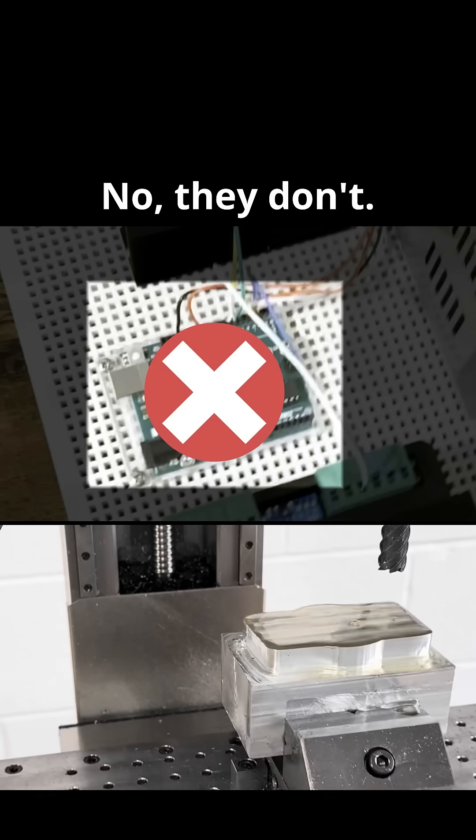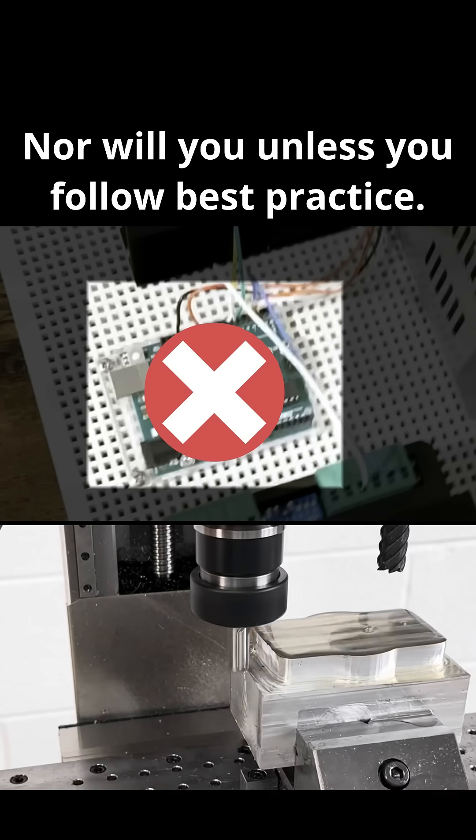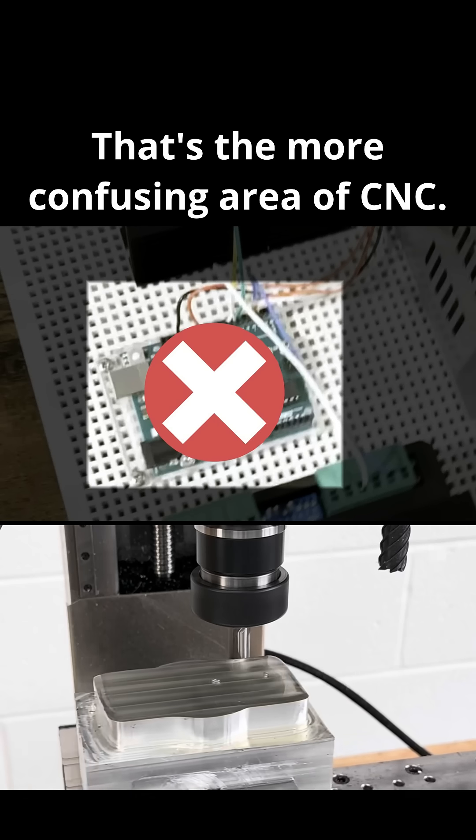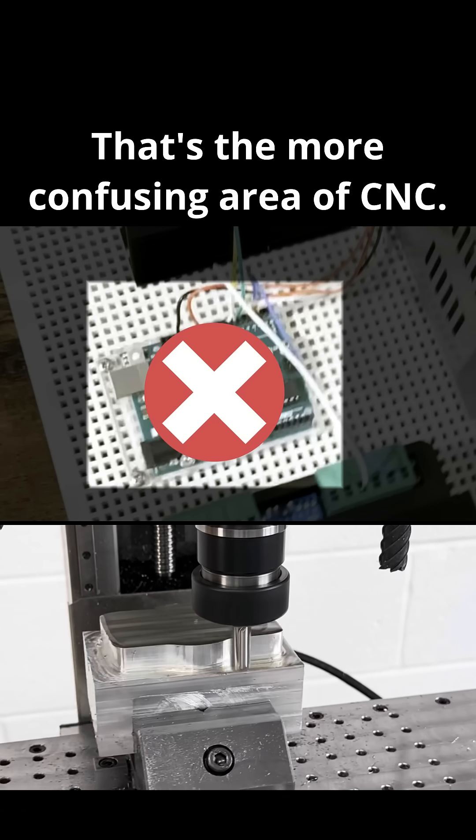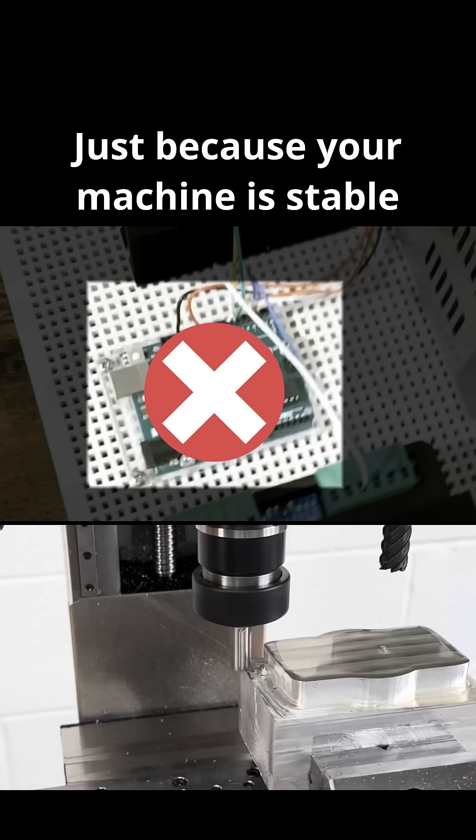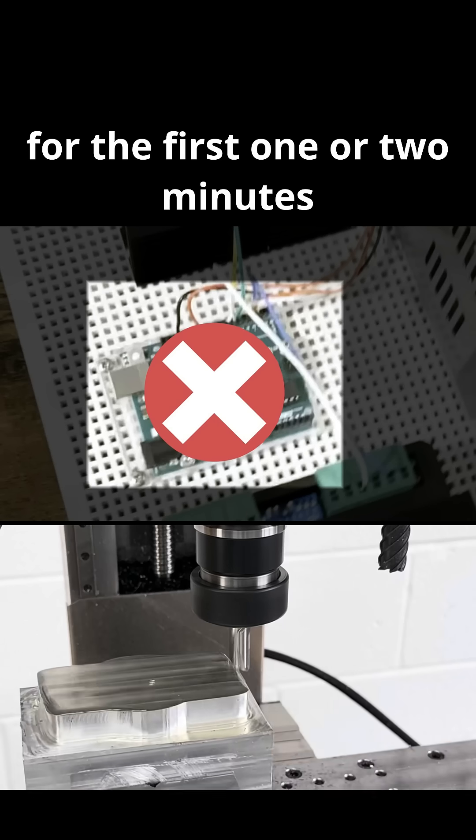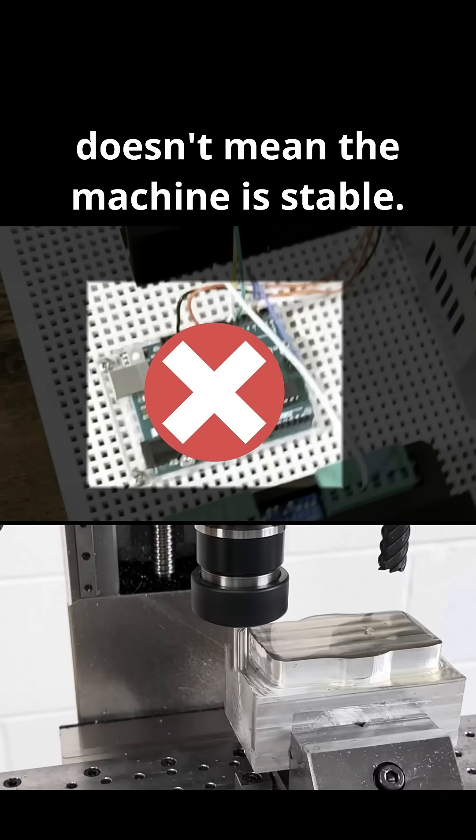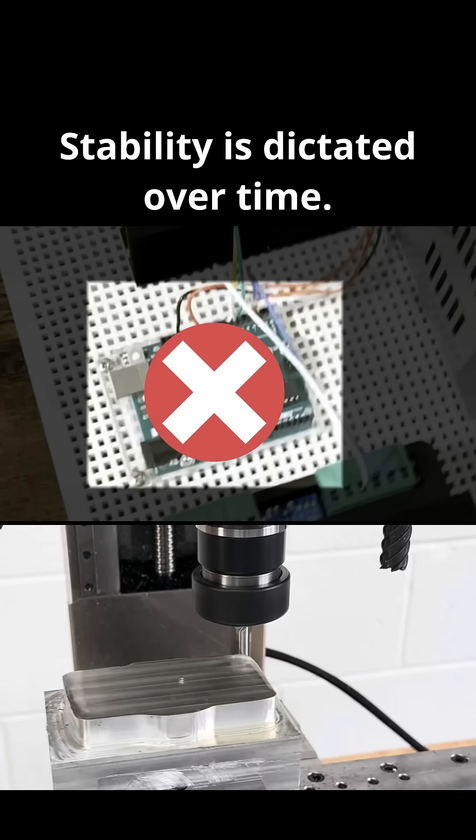Do they ever know if it's stable? No, they don't. Nor will you unless you follow best practice. That's the more confusing area of CNC. Just because your machine is stable for the first one or two minutes doesn't mean the machine is stable. Stability is dictated over time.